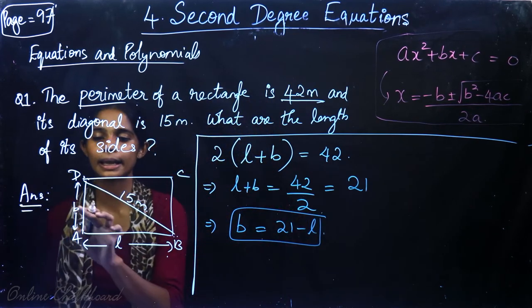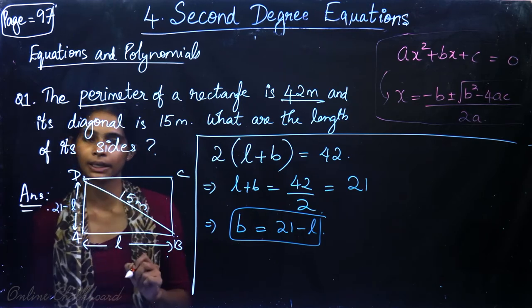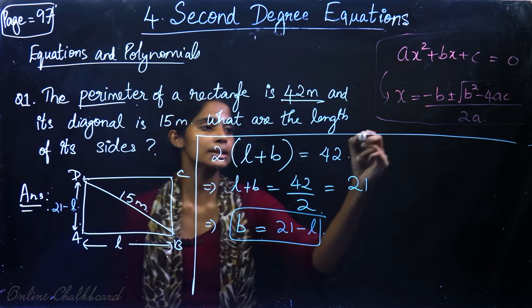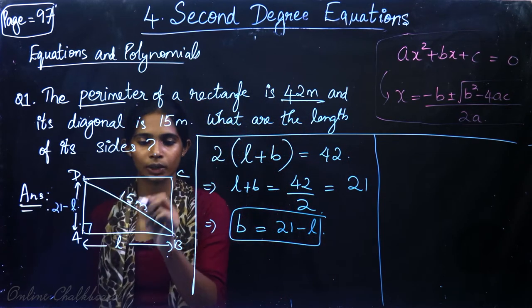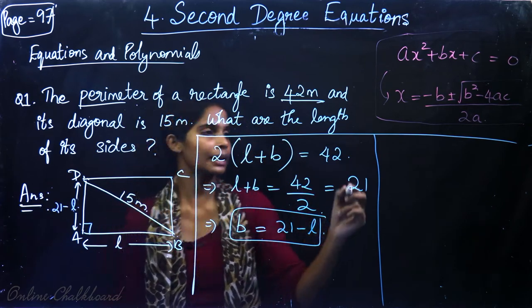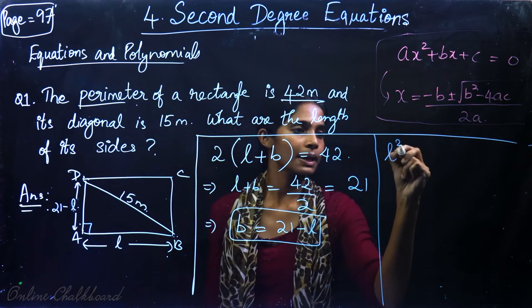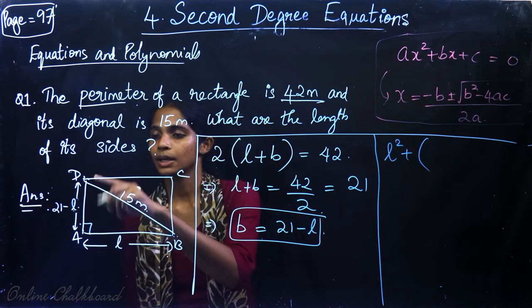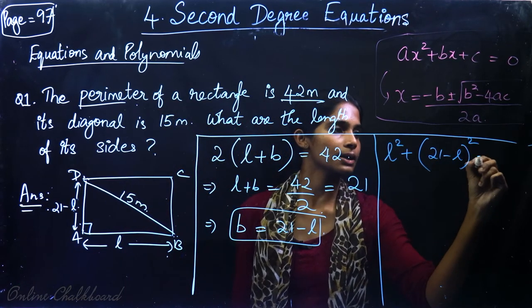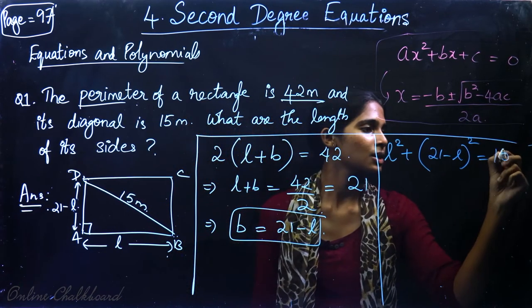From here I can say b is 21 minus l. So we have one side of l and the other side of 21 minus l. We apply the Pythagoras theorem. We have a right triangle. So by Pythagoras theorem we can find the value of l. The diagonal is the hypotenuse, which is 15 meters.